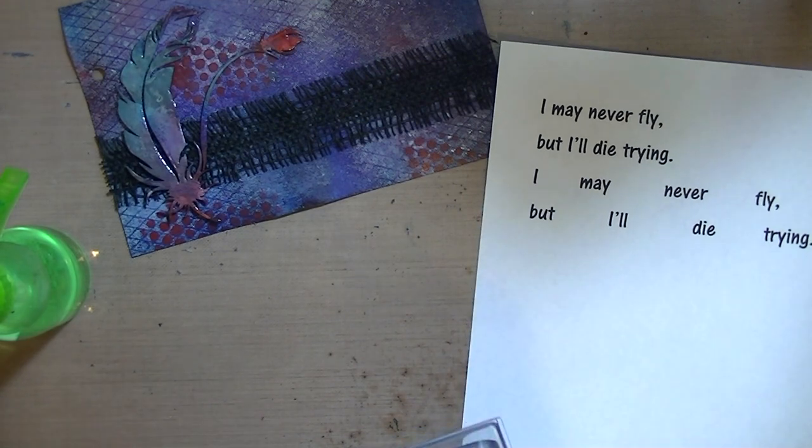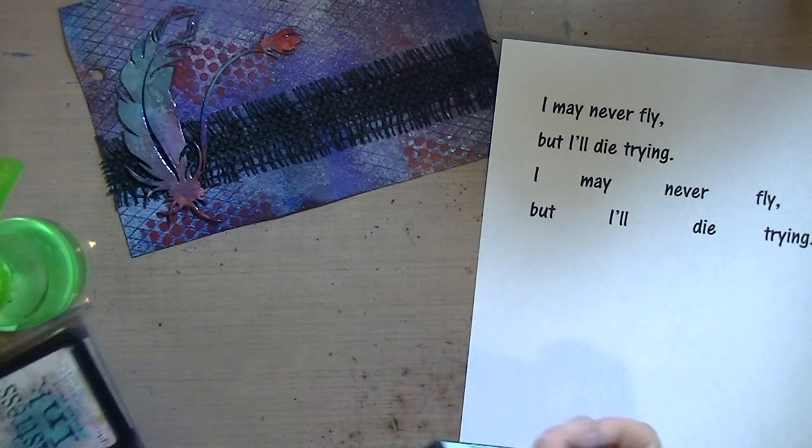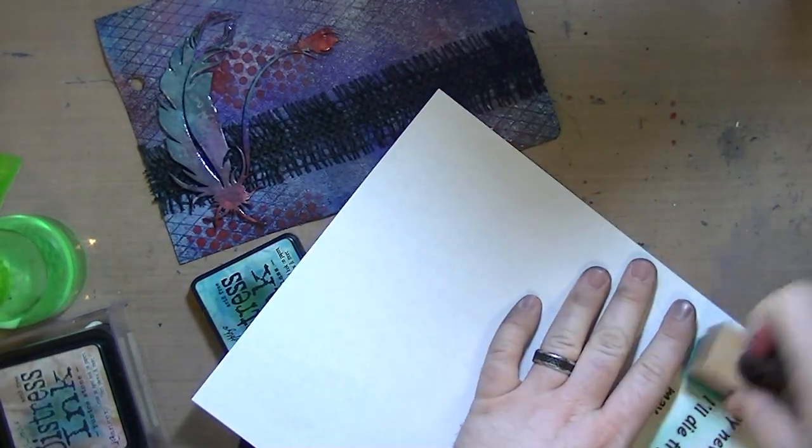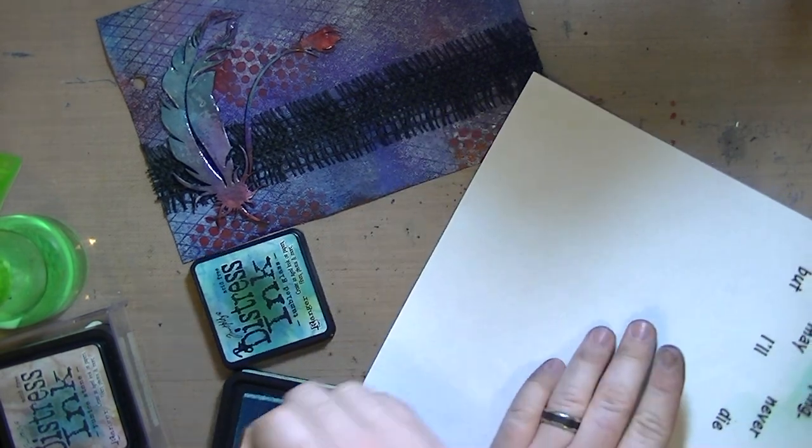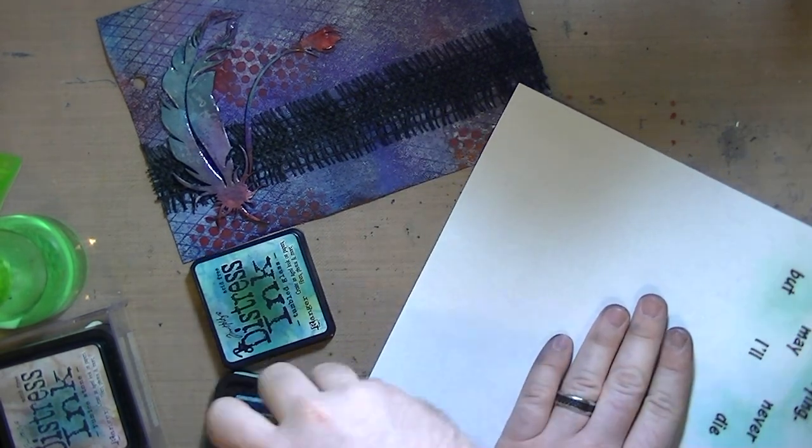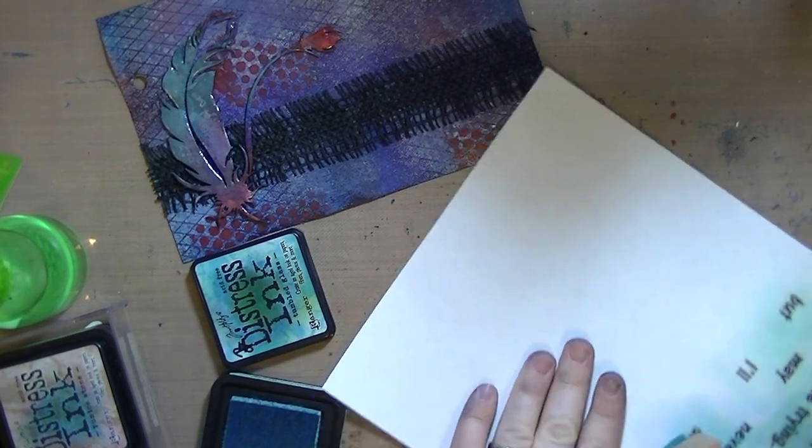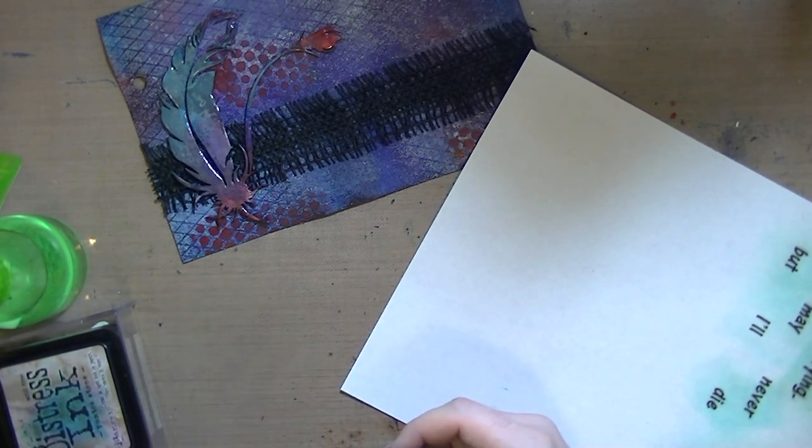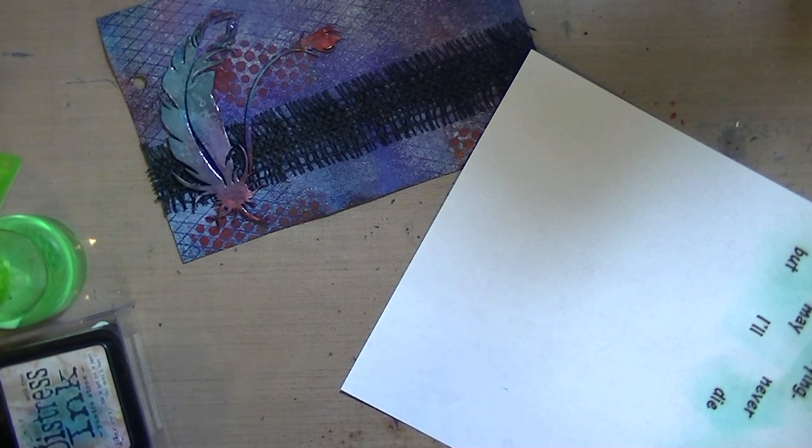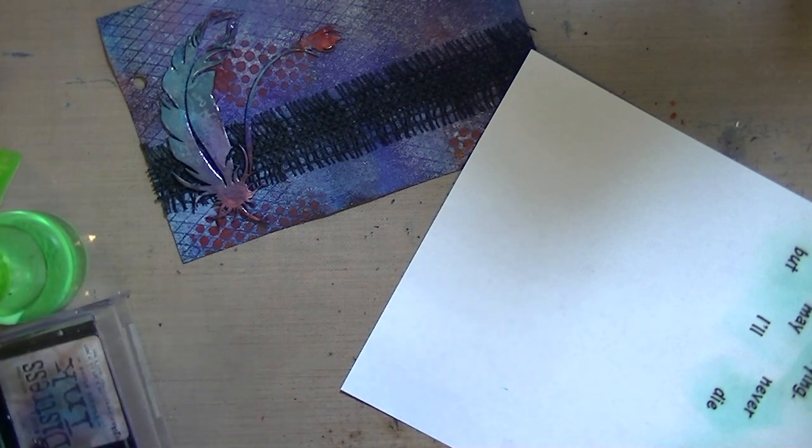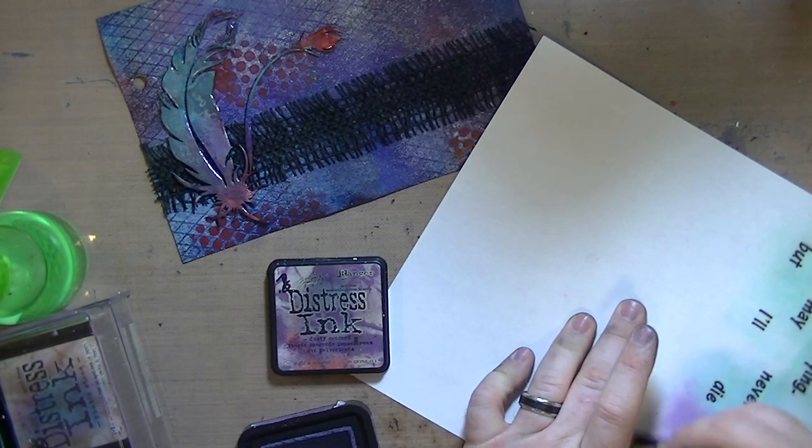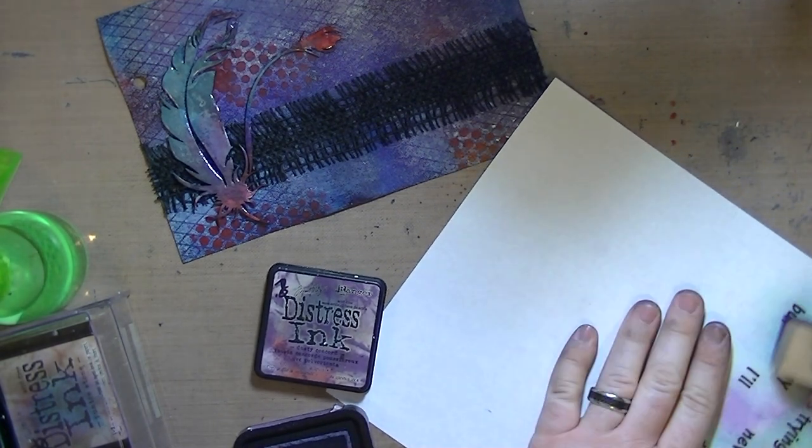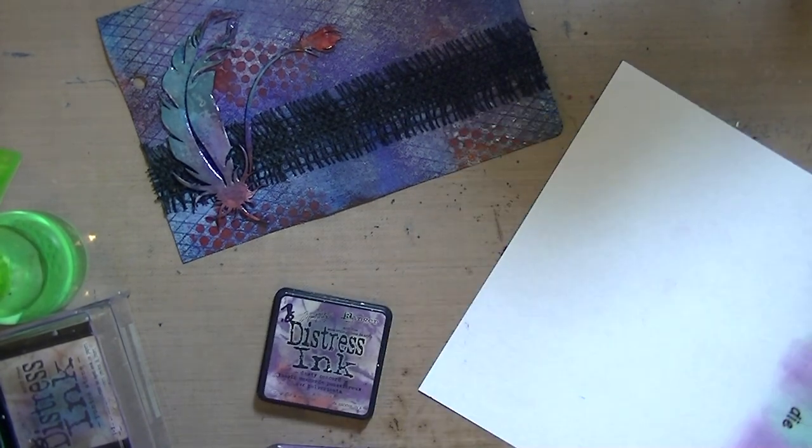Then I went to my computer and I typed up this phrase. It says 'I may never fly but I'll die trying.' I am using tumbled glass distress ink. I wanted to pull some of that light blue, I know it looks kind of green but it might look blue by the time you get it. Then dusty concord which I thought would complement the purple in the background.